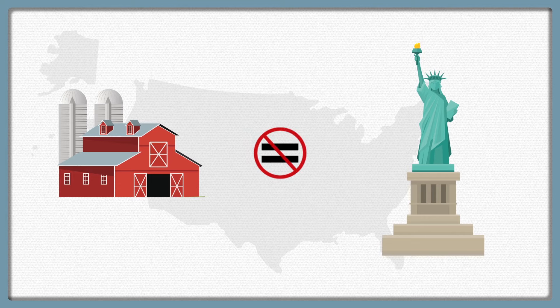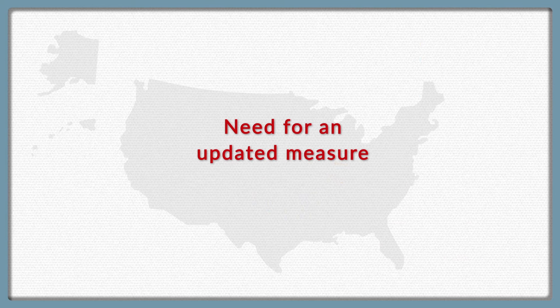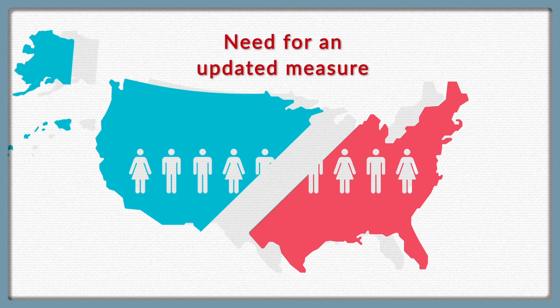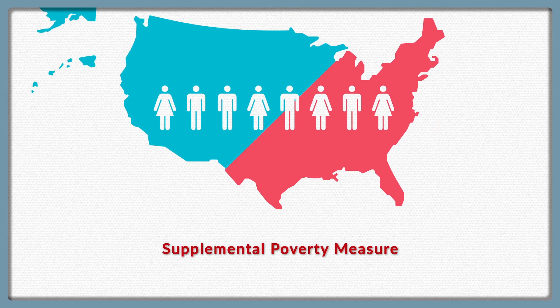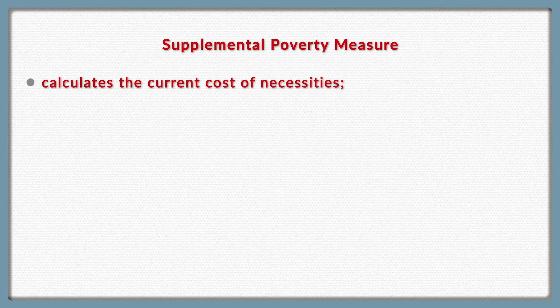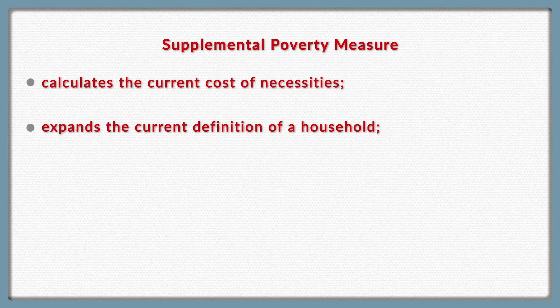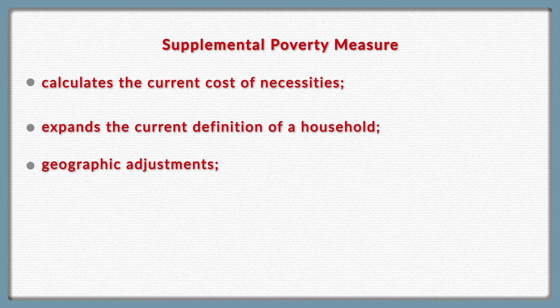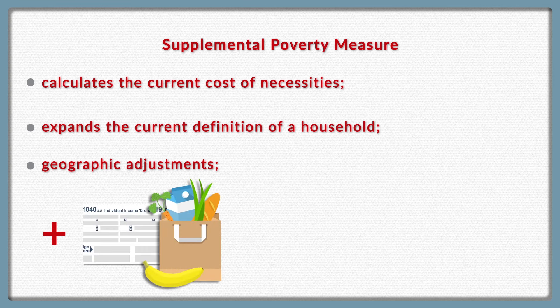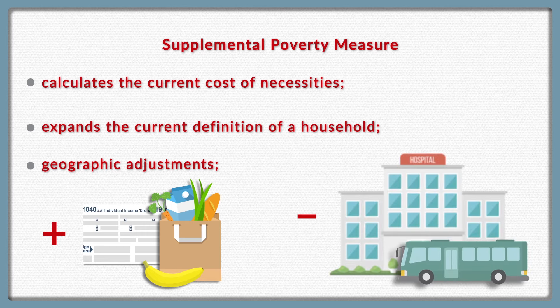Over the years, researchers and policymakers have discussed the need for an updated measure. And in 2011, the U.S. Census Bureau first published a new measure called the Supplemental Poverty Measure, or SPM. This new measure calculates the current costs of necessities. It expands the definition of a household to include people who aren't related by marriage, birth, or adoption. It makes geographic adjustments for differences in housing costs. And when it counts resources, it considers not just income, but also the value of public benefits and tax credits, and it subtracts the costs of medical and work expenses.